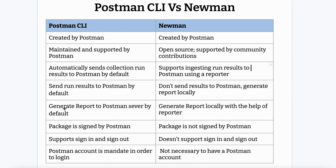For example, with Newman you can generate an HTML report locally, but Postman CLI does not have that. However, it provides a very good report directly on the Postman server. It is also really very fast — I have executed it a couple of times and within a second all the data syncs with the Postman server. If I change anything locally and execute the test cases with Postman CLI, those changes are automatically picked up and synced.